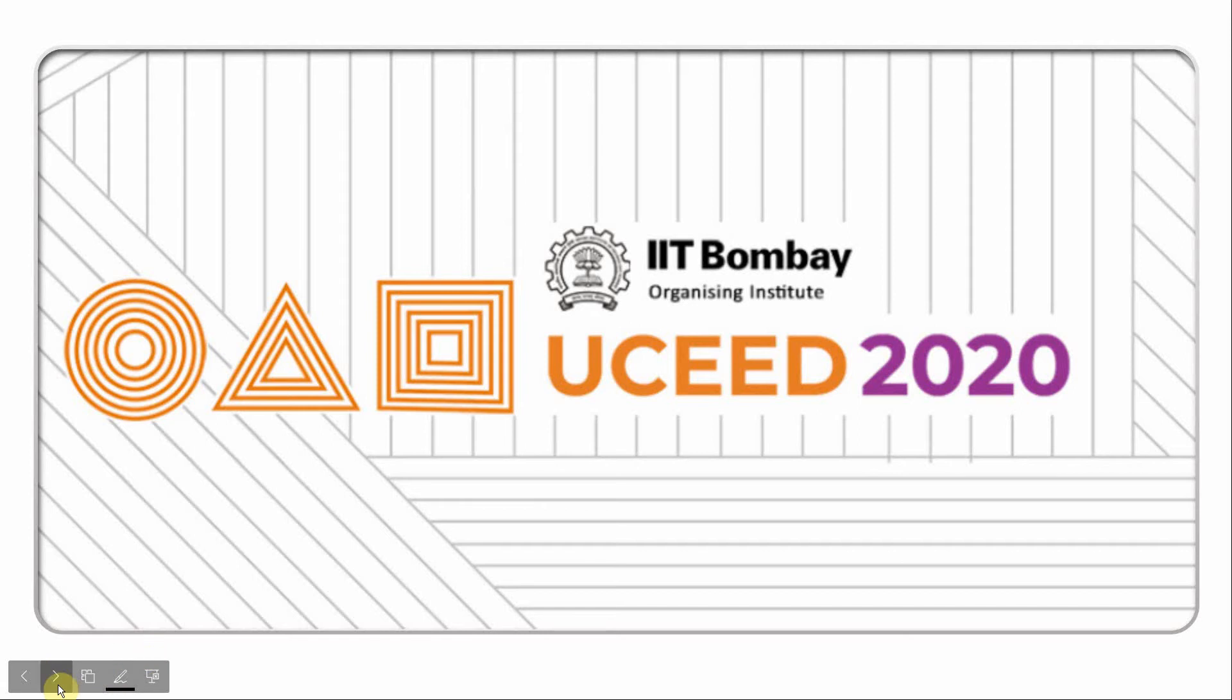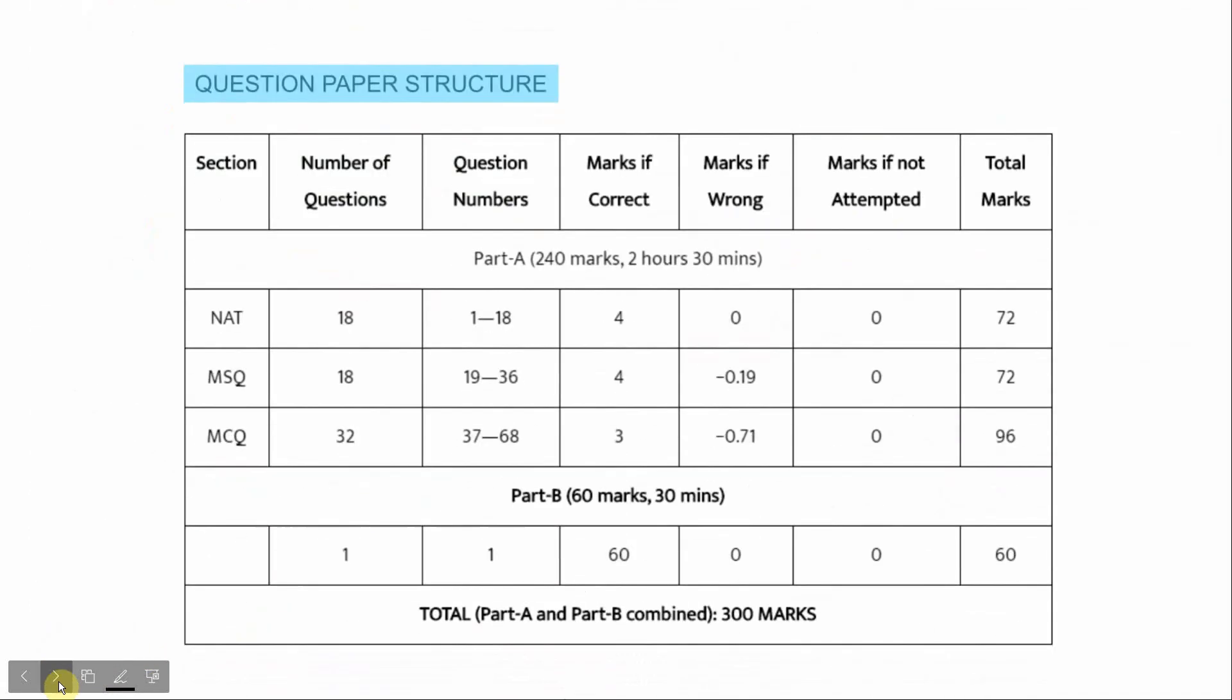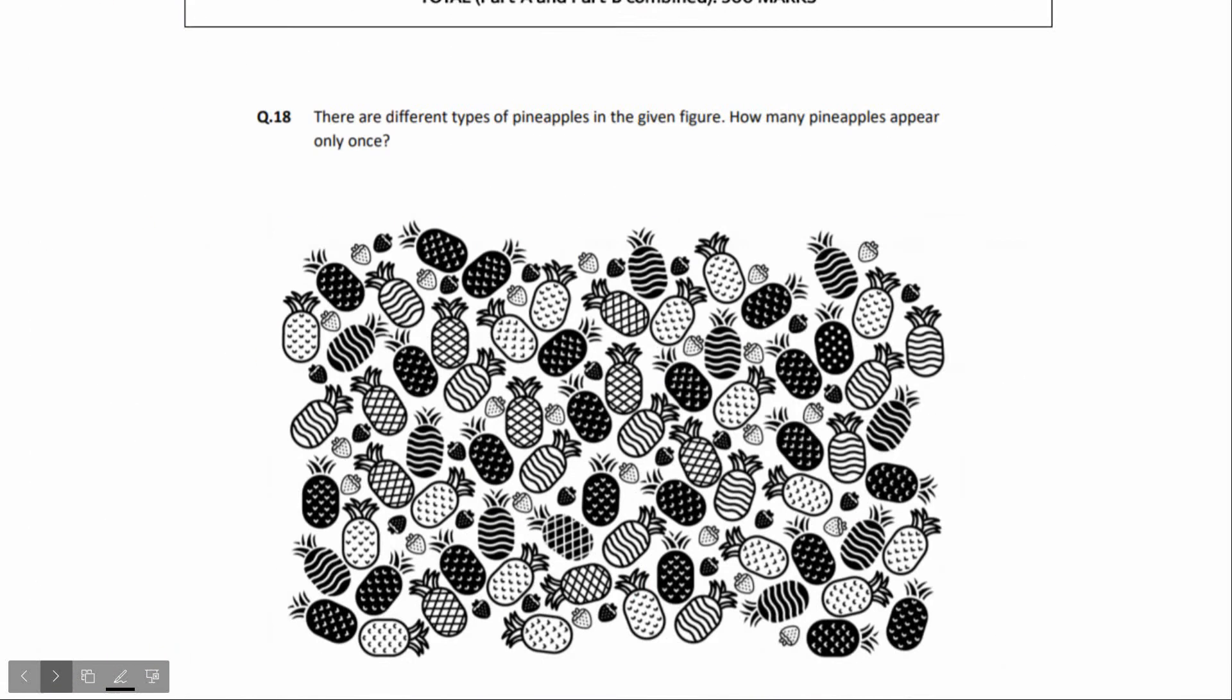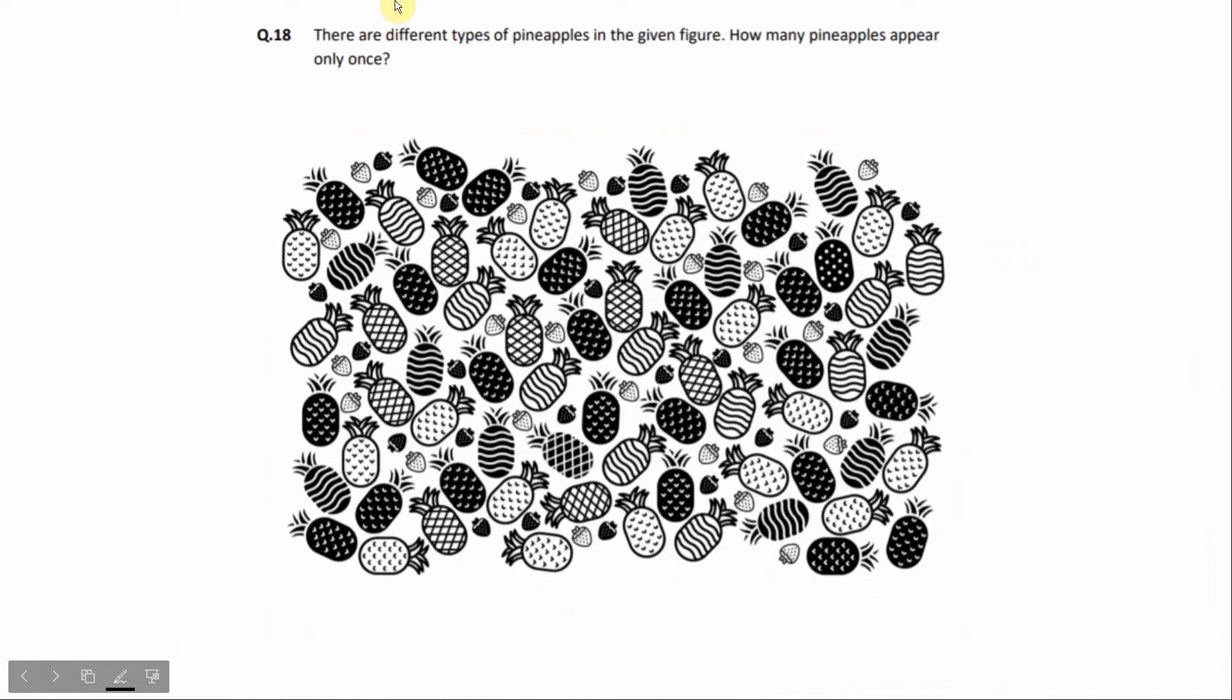Hey! What's there? Part A Question 18: There are different types of pineapple in the given figure. How many pineapples appear only once?